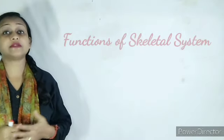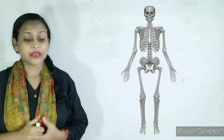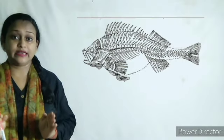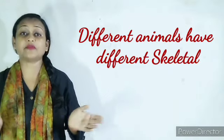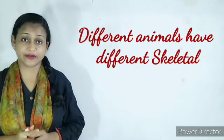First of all, what is the function of the skeletal system? The skeletal system gives shape to the animal body, and by studying the skeleton of a particular animal we can identify what animal it is. In different animals, the shape of the skeleton will be slightly different.